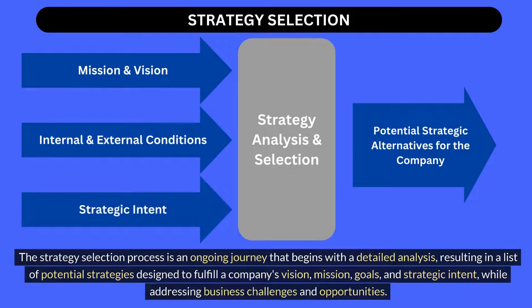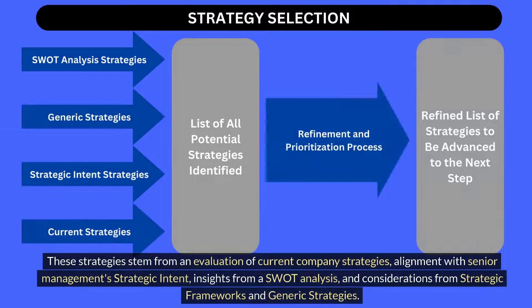The strategy selection process is an ongoing journey that begins with a detailed analysis, resulting in a list of potential strategies designed to fulfill a company's vision, mission, goals, and strategic intent, while addressing business challenges and opportunities. These strategies stem from an evaluation of current company strategies, alignment with senior management's strategic intent, insights from a SWOT analysis, and considerations from strategic frameworks and generic strategies.